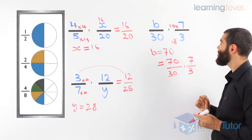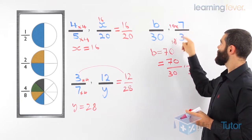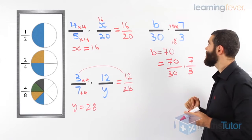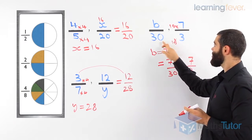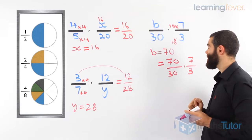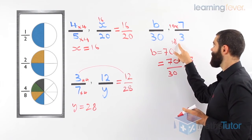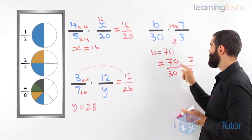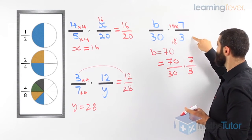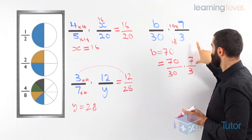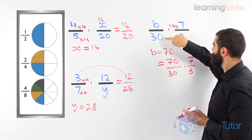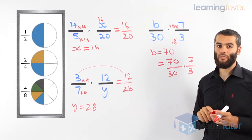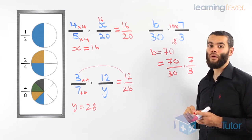Same thing here: 7 over 3 is equivalent to b over 30. We are told to find b. How do they get from 3 to 30? Times 10. Three times 10 is 30, seven times 10 is 70, so b is 70. Therefore, 70 over 30 and 7 over 3 are equivalent fractions — they have the same value, but they are written differently.